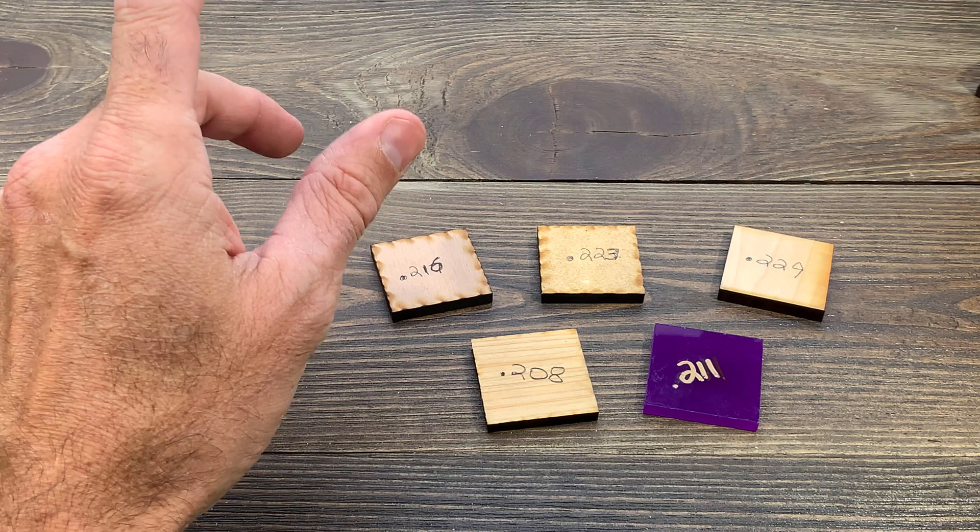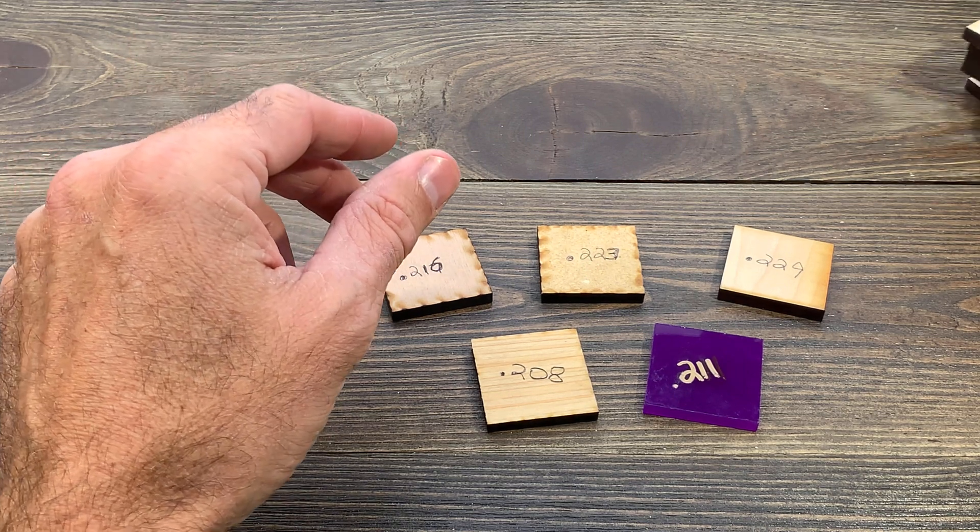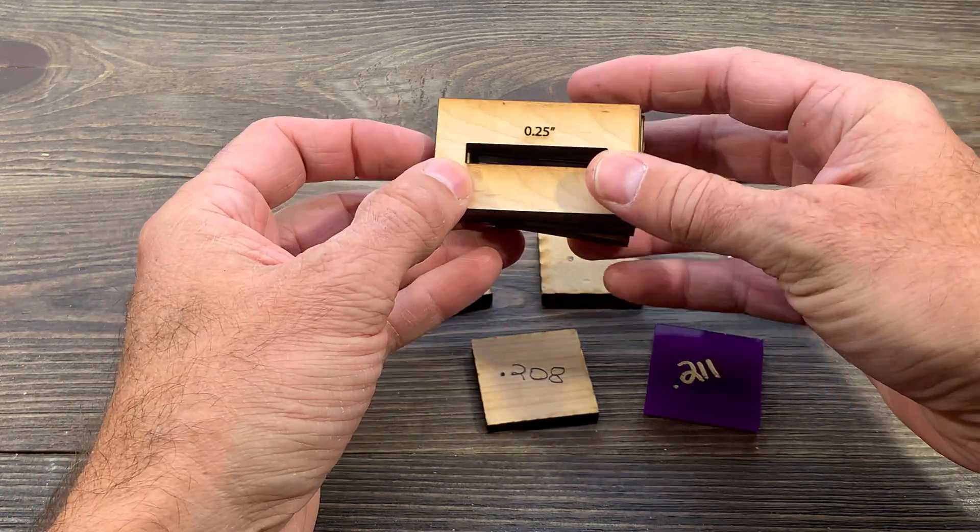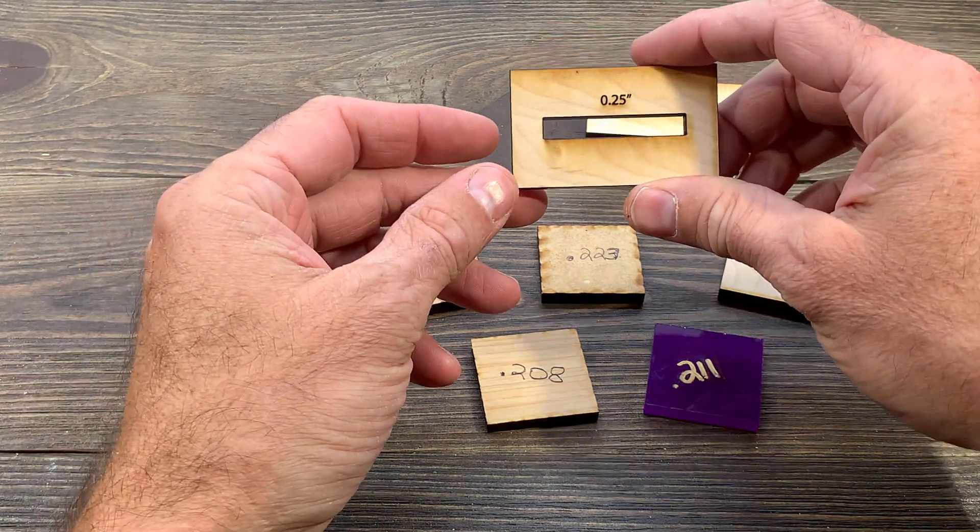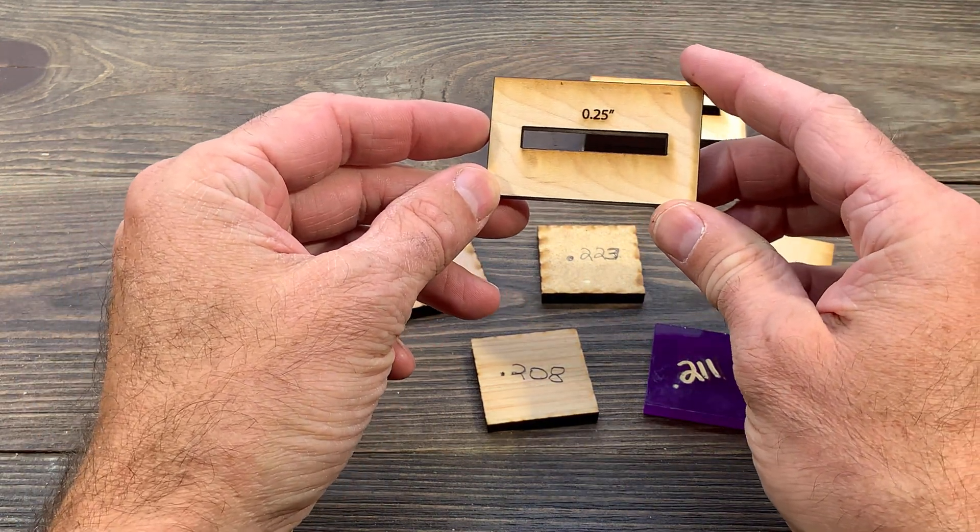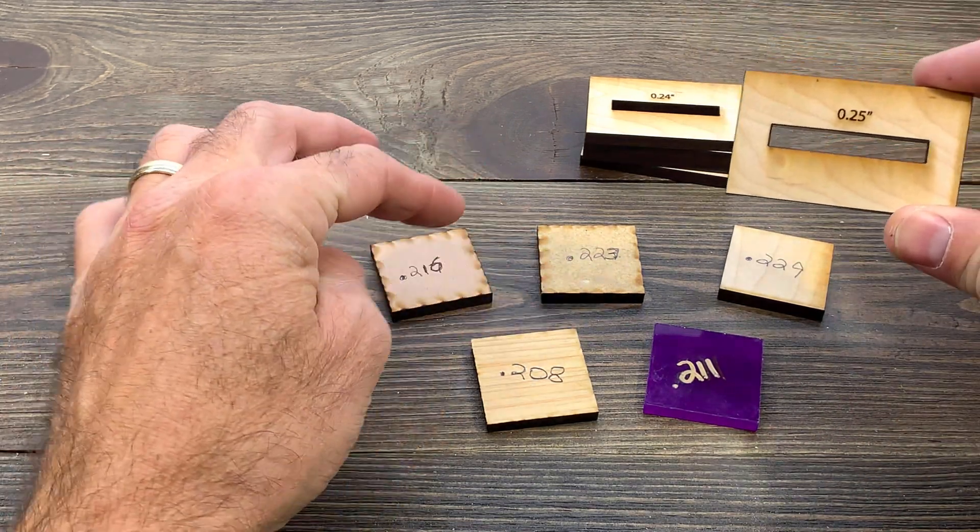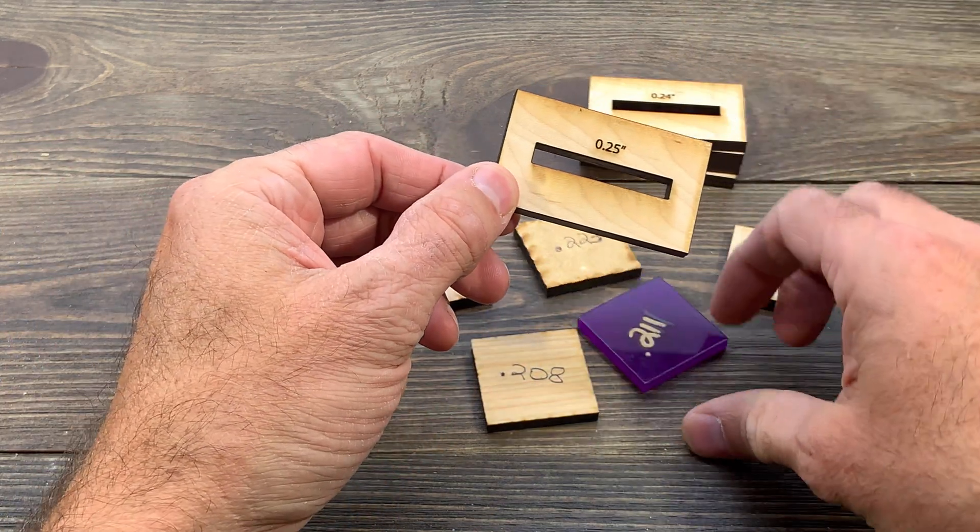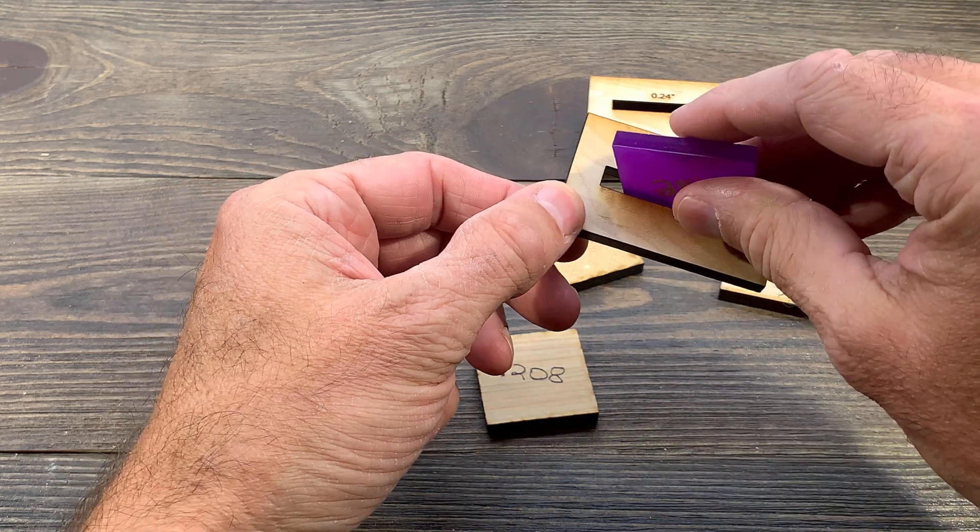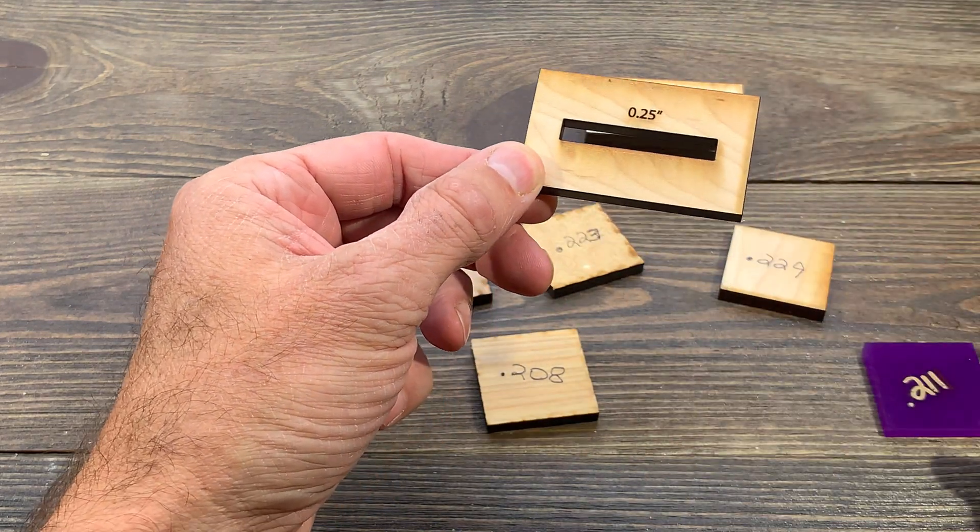Now let me introduce another part of the problem. I've got a bunch of different slots here that I cut at different sizes. For example, this one I cut at 0.25. You can already tell before I even test them that none of these are going to work in here. They're going to fall right through because they are far thinner than 0.25.